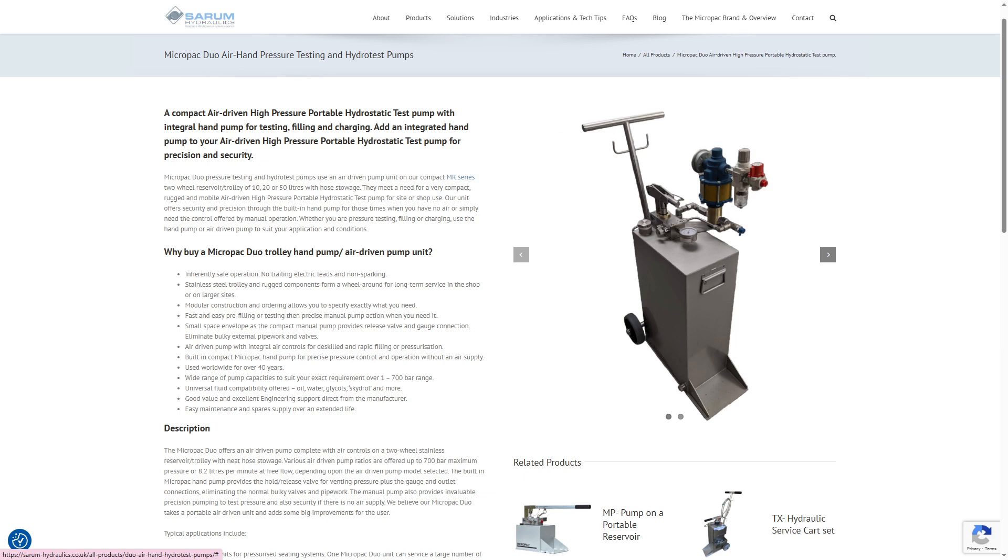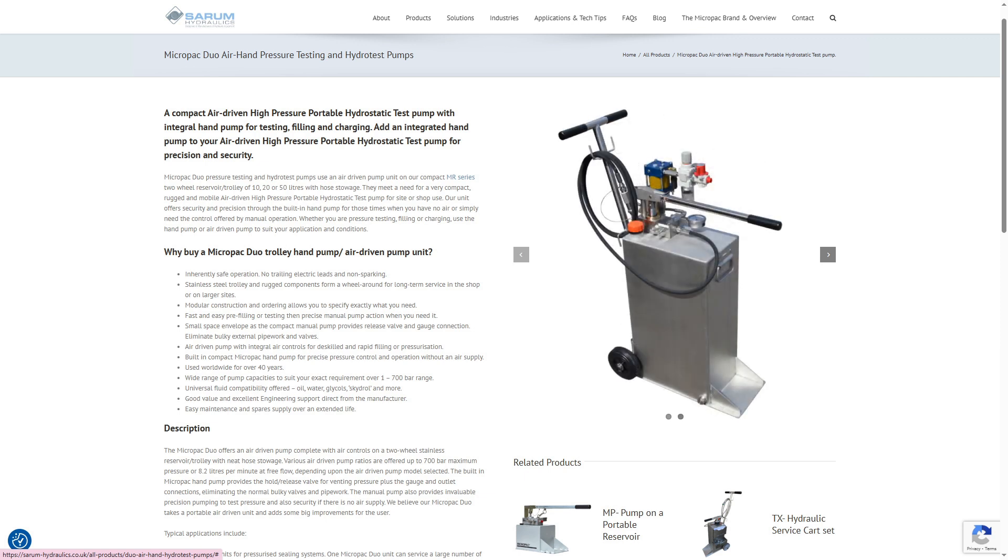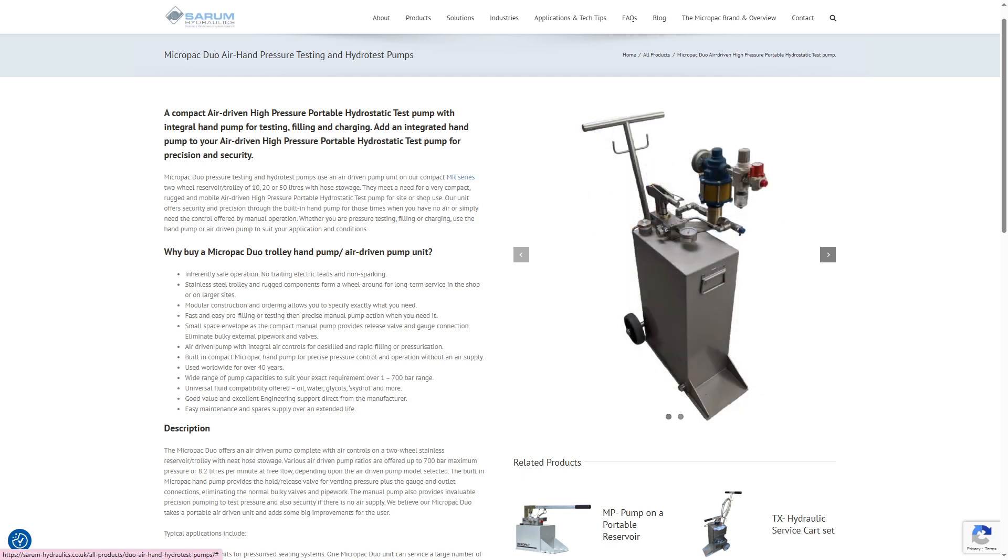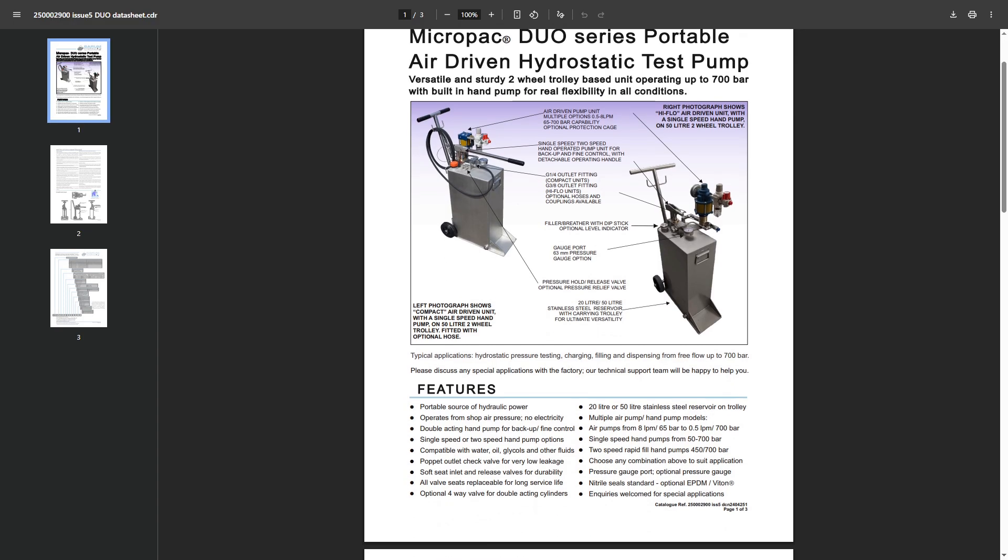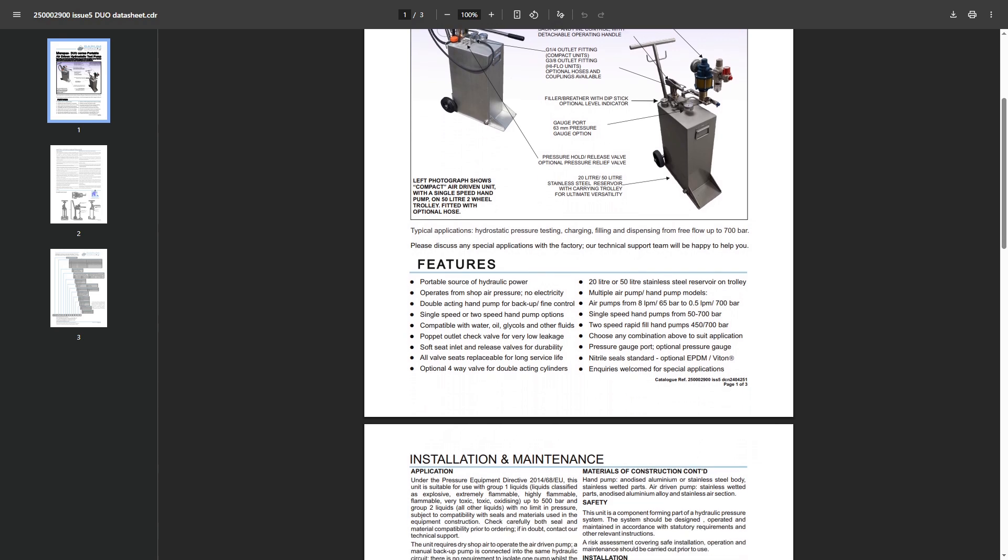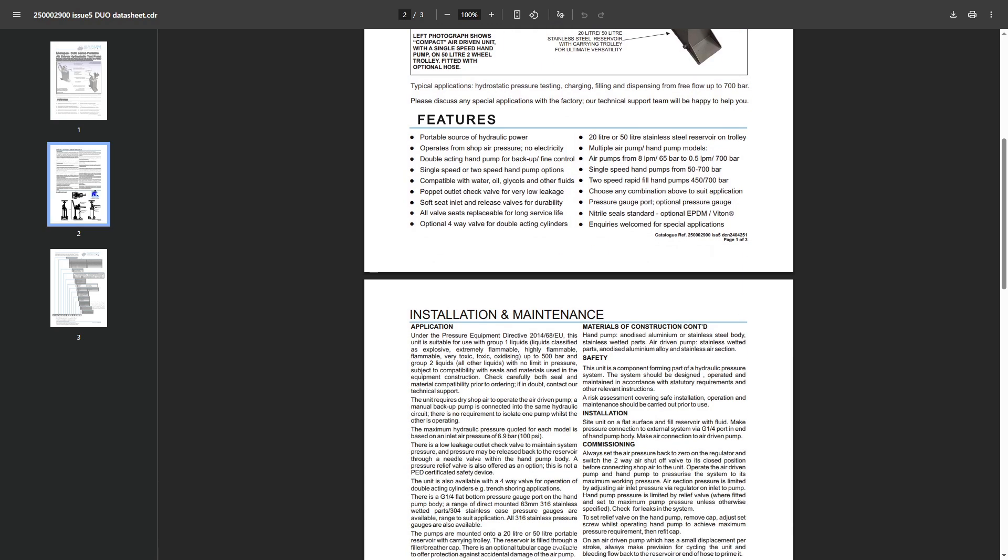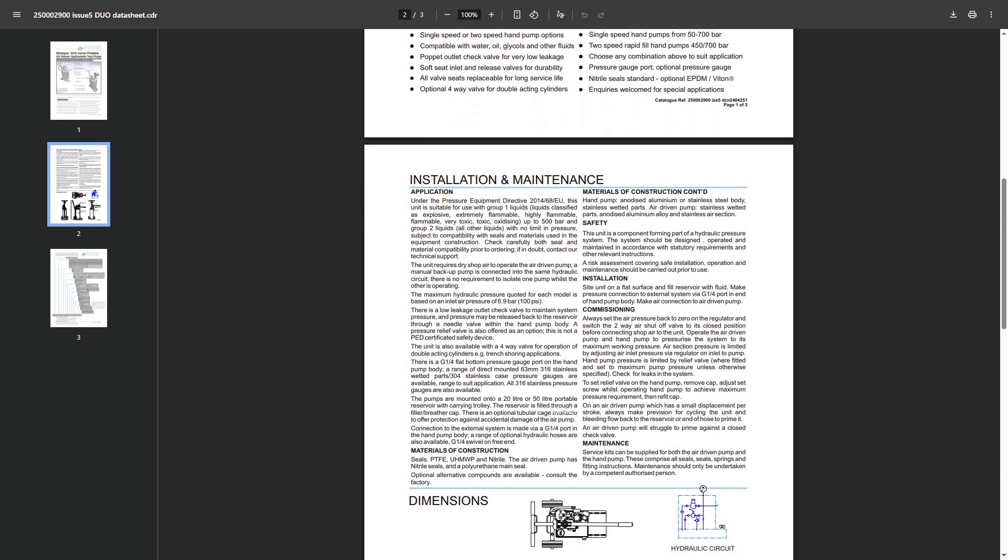Thirdly, we have a DUO unit which uses both an air driven pump and a manual hand pump side by side. This gives you ultimate versatility for pressure testing and dispensing fluids. You use the air pump to fill up a test vessel quickly with fluid before using the hand pump to pump up to final test pressure with more control. You can find out more about this product by looking at the webpage and brochure.